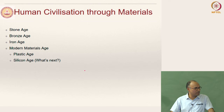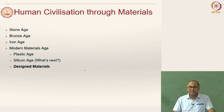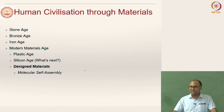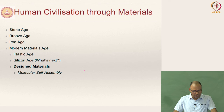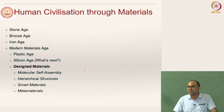And then of course we have the silicon age. Silicon did so much that we stopped talking to each other directly — we start talking through phones to each other. Now we are moving beyond silicon age towards designed materials. We are talking about whether we can design materials the way we want and get the output we want. Examples include molecular self-assembly, hierarchical structures, smart materials, and metamaterials — the new age materials where a lot of R&D money is being spent, which is going to revolutionize the way we see the world.